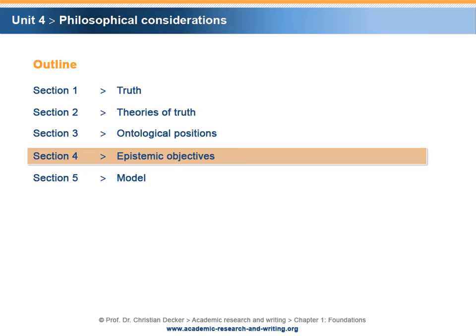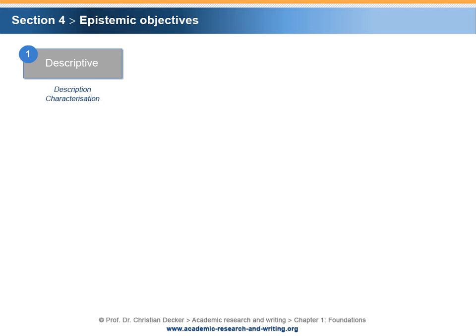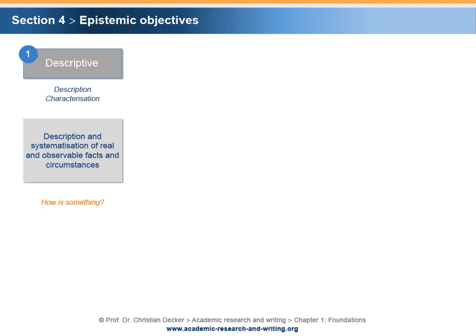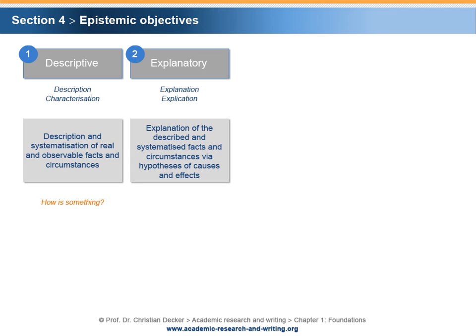Section 4 – Epistemic Objectives. Sciences aim for knowledge about reality. The goals for the derivation of knowledge are called epistemic objectives. The four principal epistemic objectives will be introduced and discussed. A descriptive objective serves the description or characterization — it addresses the description and systematization of real and observable facts and circumstances. The researcher asks the question: how is something? An explanatory objective serves the explanation or explication, addressing the explanation of described and systematized facts and circumstances via hypotheses of causes and effects. The researcher asks the question: why is something the way it is?